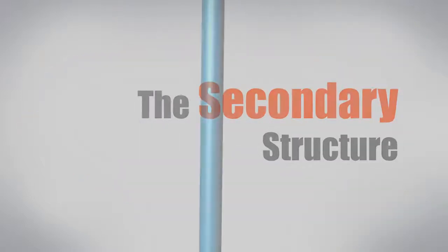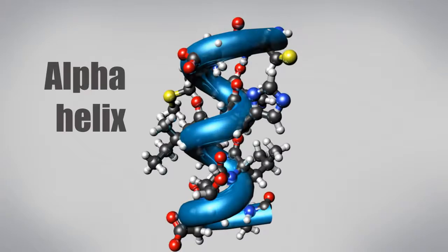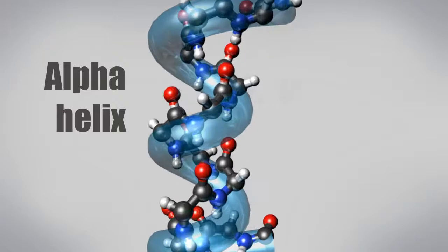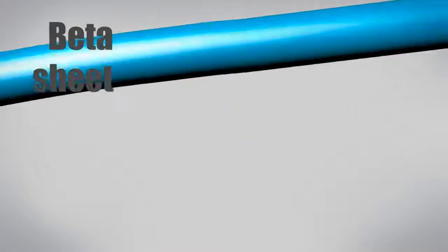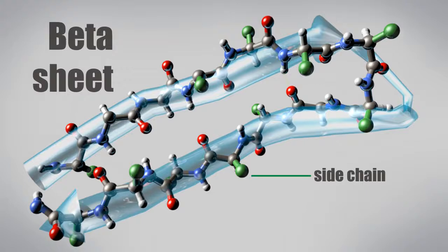These protein chains often fold into two types of secondary structures stabilized by hydrogen bonds. A protein chain can fold into a rigid alpha helix, forming regular patterns of hydrogen bonds between the backbone atoms of nearby amino acids. Backbone atoms of the chain can interact side by side to form beta sheets.